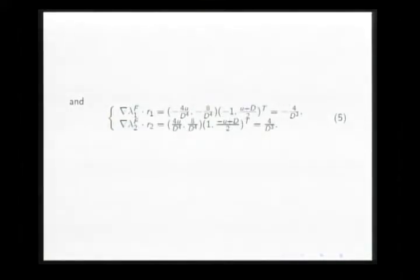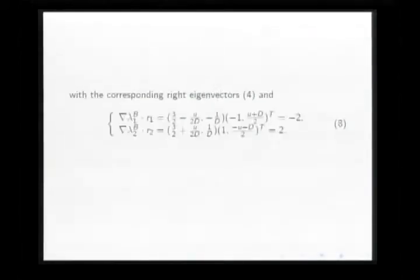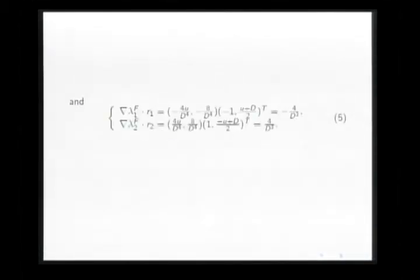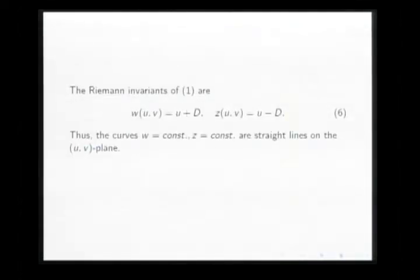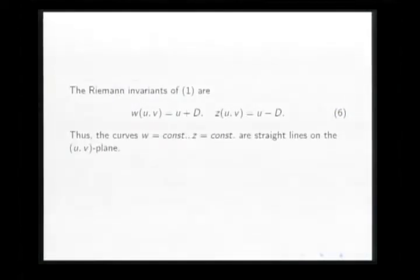And then I calculate the Riemann invariant for the system. Here, W is U minus capital D. Thus, the curve W is a constant here. It's straight lines on the U-V plane.